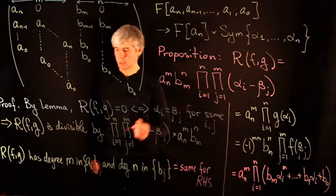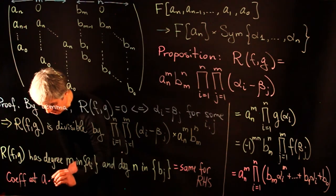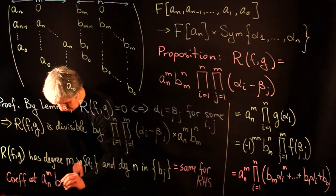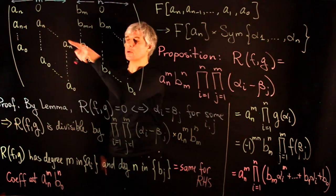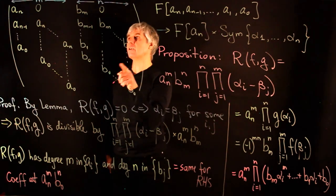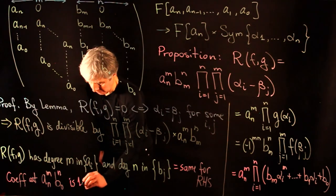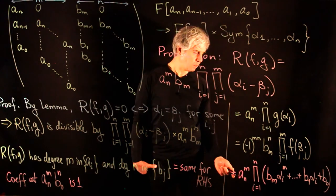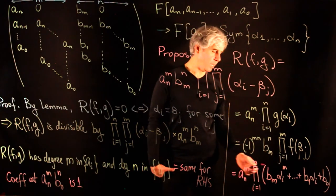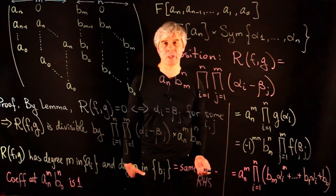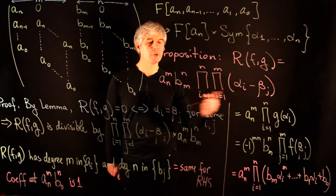To show the constant factor equals 1, we look at the coefficient of a_n^m · b_0^m. In the determinant, this corresponds to the diagonal of the matrix, and in the expansion the coefficient at this monomial is 1. In the product formula, this coefficient is also 1. This proves the determinant of the matrix is indeed expressed by the product formula.